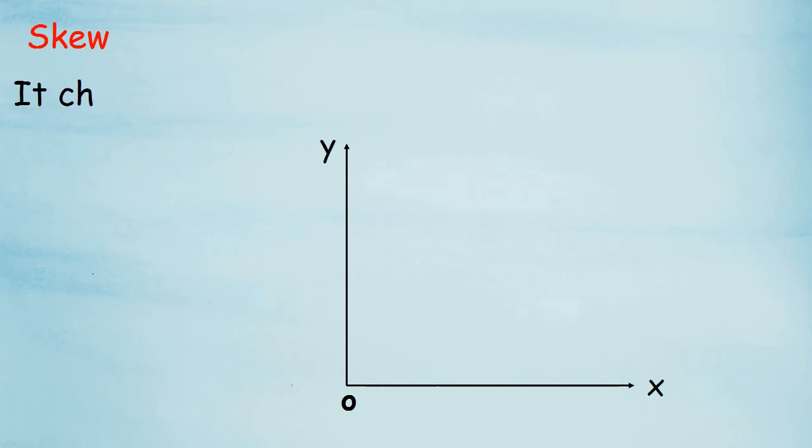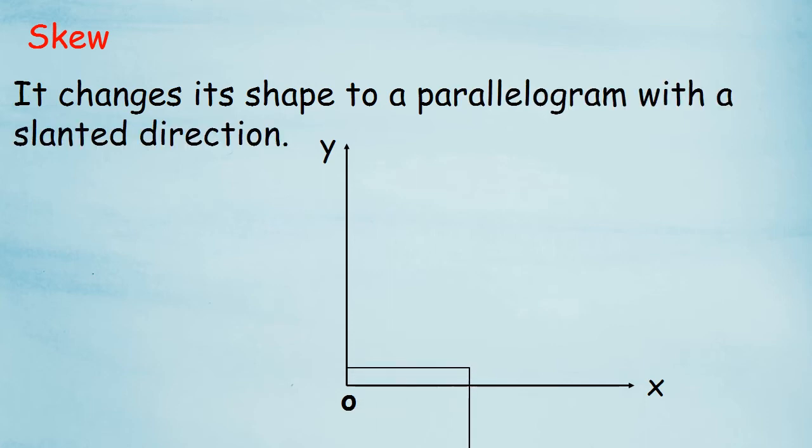Next, it's skew. I like the name. Just changes its shape like a parallelogram with a slant direction. Just look at the example. The square is getting slanted and it looks like a parallelogram. That's it.